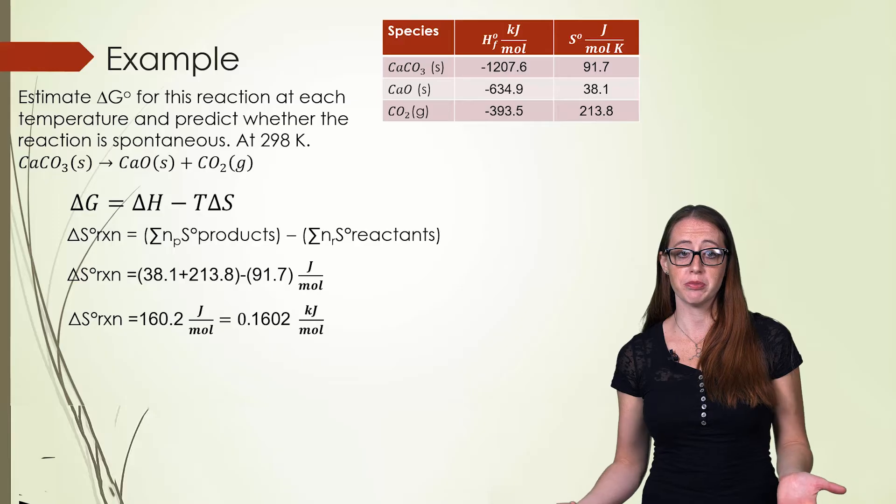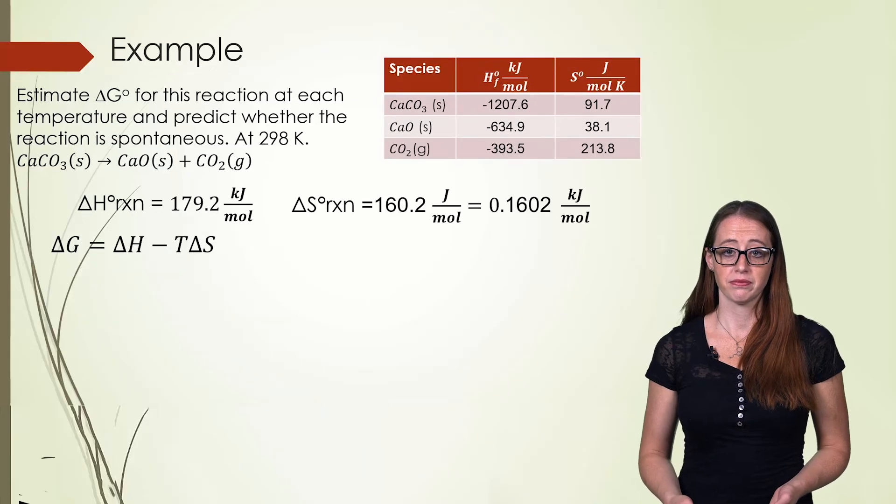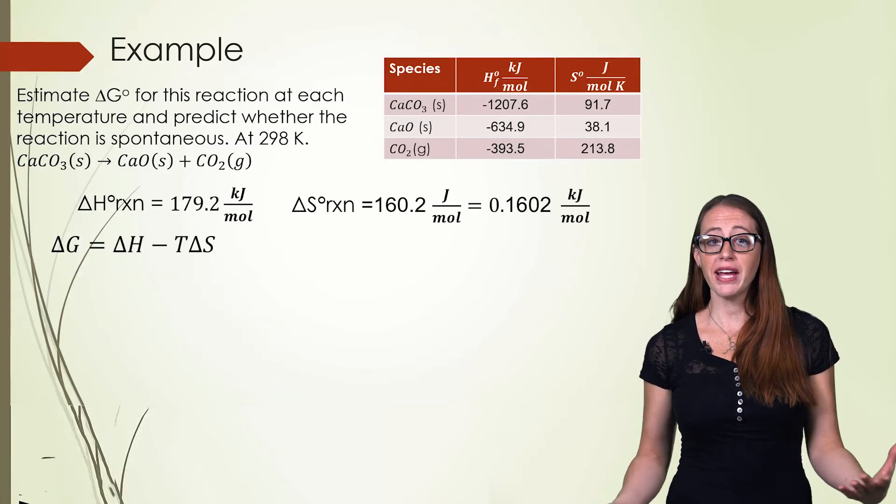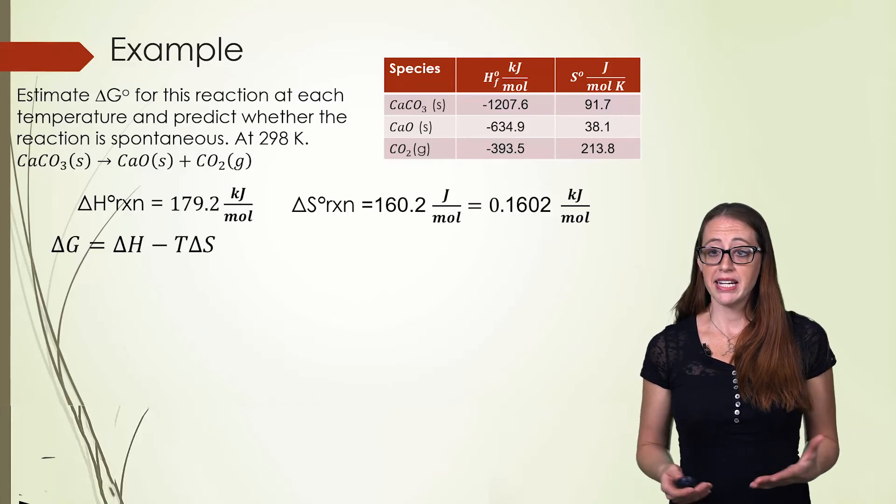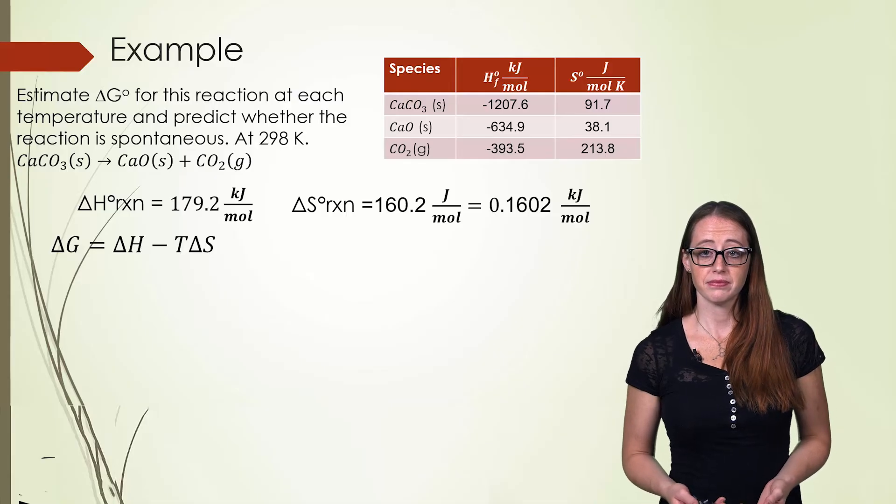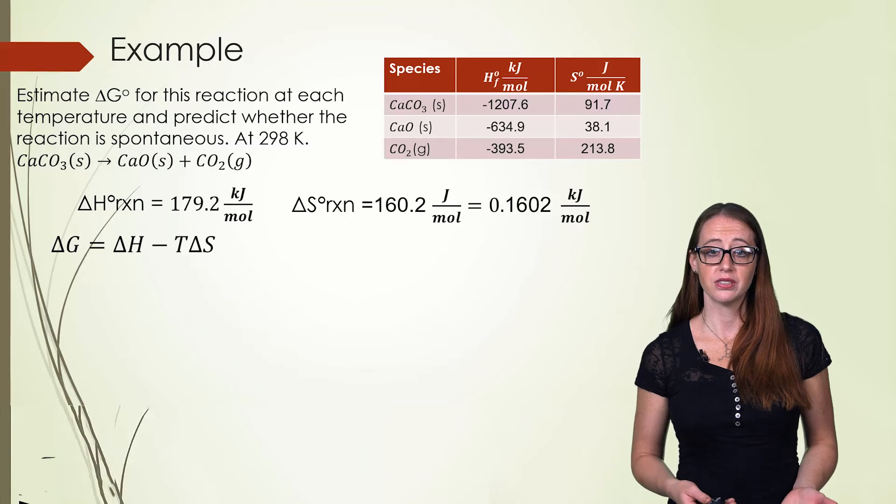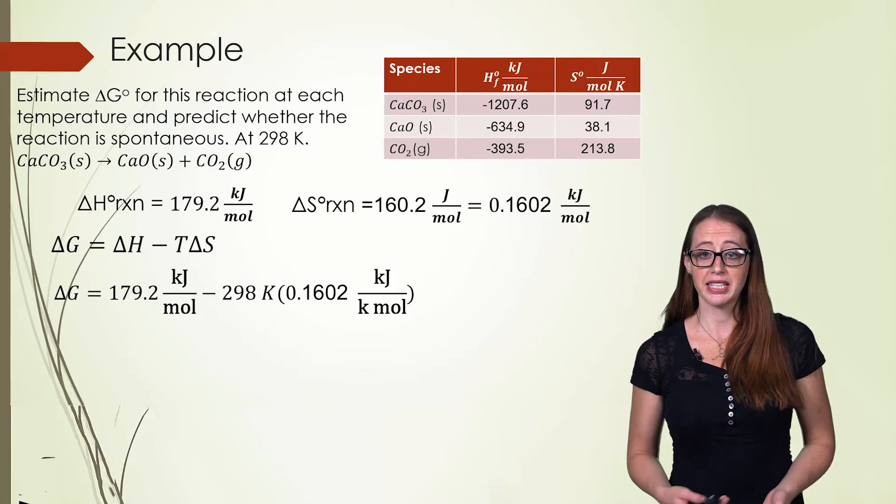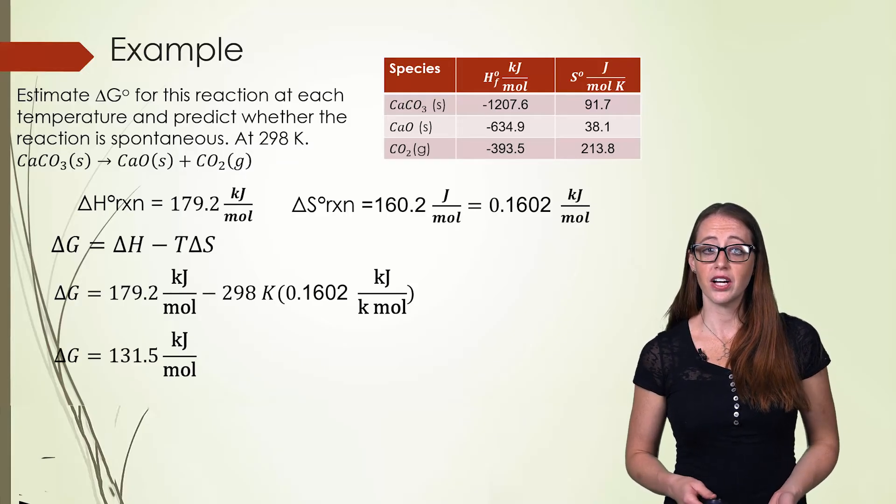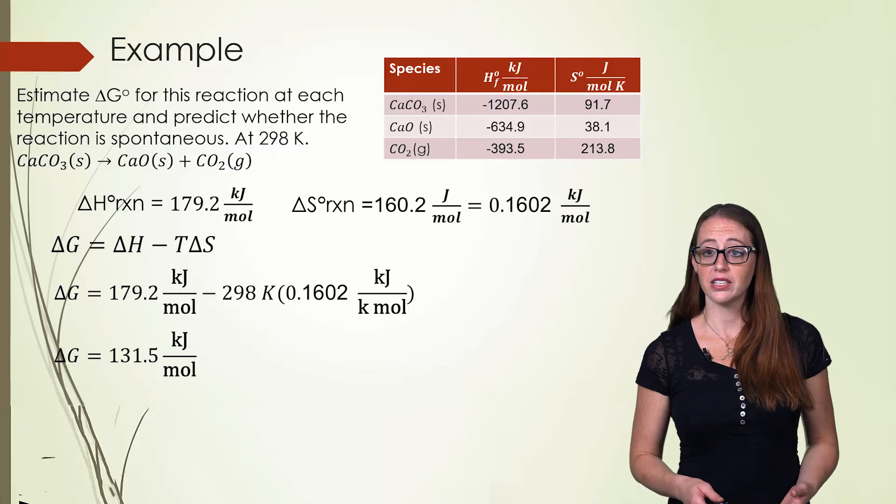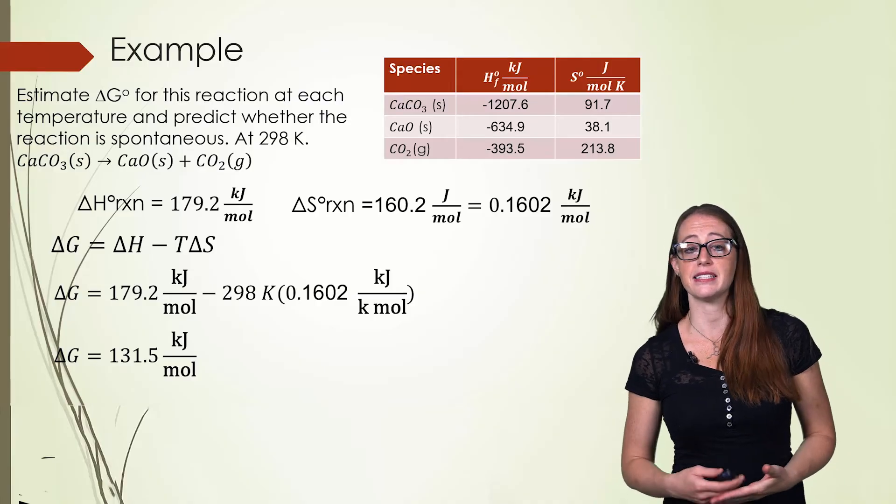If you had chosen to do it in joules per mole and you had chosen to do enthalpy in joules per mole, that would have been okay too. All we have left now that we have our two values is to fill into the free energy equation. So take a minute and do this yourself before moving on. We fill in our 179.2 and the 0.1602. We have our units matching so we can keep moving forward. Once we type this in and we solve, we get our Gibbs free energy of 131.5 kilojoules per mole. And because it is positive, it means that the reaction is non-spontaneous at this temperature.